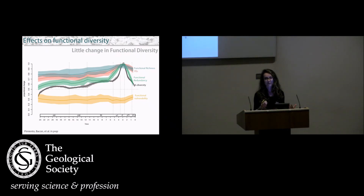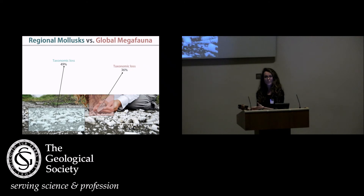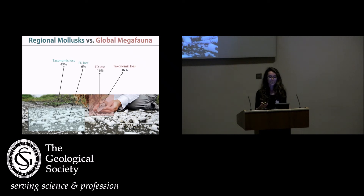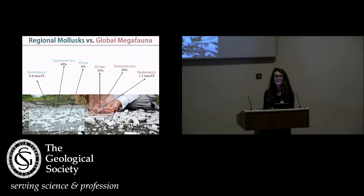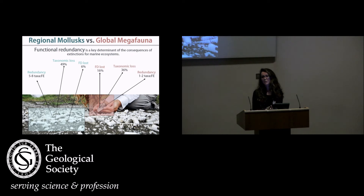This was not the case for marine megafauna, where vulnerability was really decreased. In conclusion, two extinction events — one of 36% of taxa and another of 49% — had very different effects on functional diversity. When we lost 49% of mollusks, only 6% of functional diversity was lost. Whereas when we lost 36% of marine megafauna, 16% of functional diversity was lost. We think this is because mollusks were highly redundant, with five to eight species per functional entity, whereas marine megafauna had only one or two.